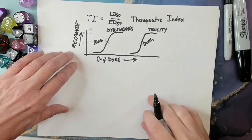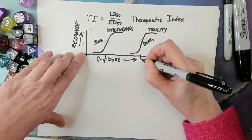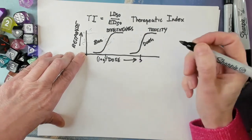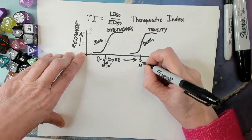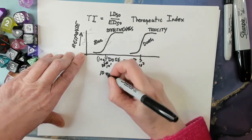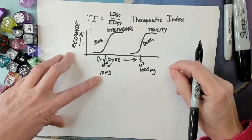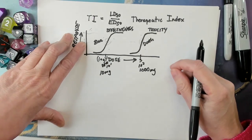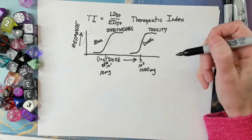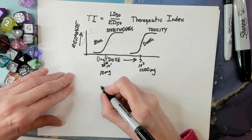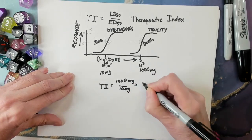So let's say this is a logarithm of dose. This point is 10 to the 1, and this is 10 to the 3 — that's the equivalent of 10 milligrams and 1,000 milligrams. If you take 10 milligrams of this blueness drug, it's about 50% effective in terms of turning you blue. If you take 1,000 milligrams, it's about 50% lethal. So the therapeutic index equals 1,000 milligrams over 10 milligrams, which equals 100.